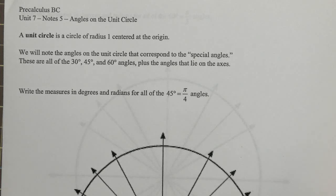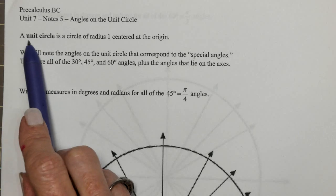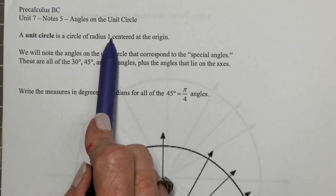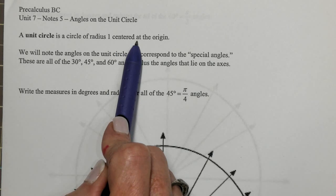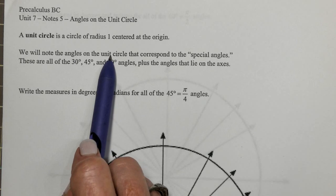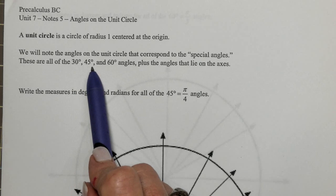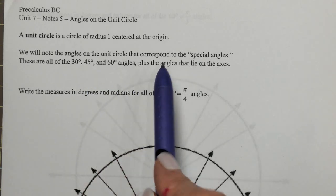Today we're talking about angles on the unit circle. The unit circle is something you're going to be talking about with trig for a long time, because this is where we get all of our special trig angles and trig ratios from. A unit circle is simply a circle of radius 1 centered at the origin. Today we're going to note the angles on the unit circle that correspond to the special angles — all of the 30, 45, and 60 degree angles, plus the angles that lie on the axes.